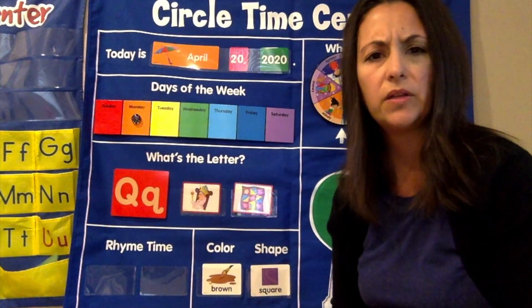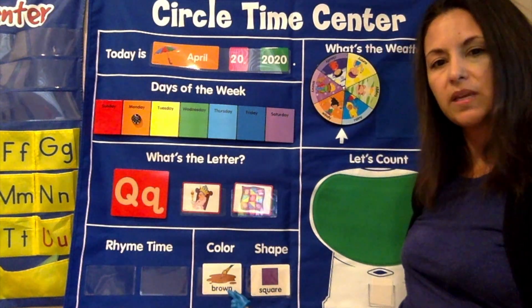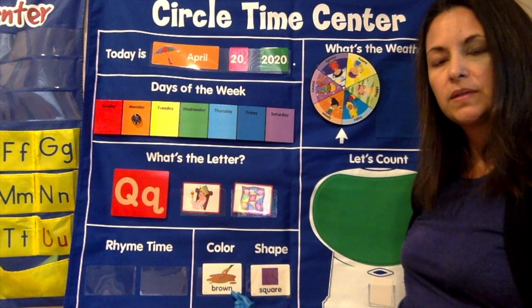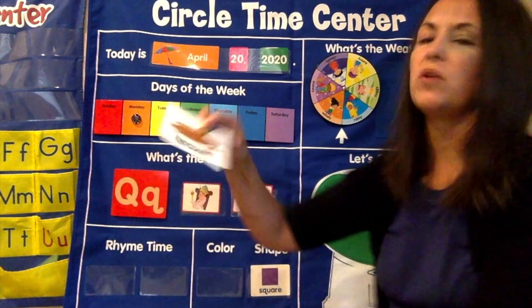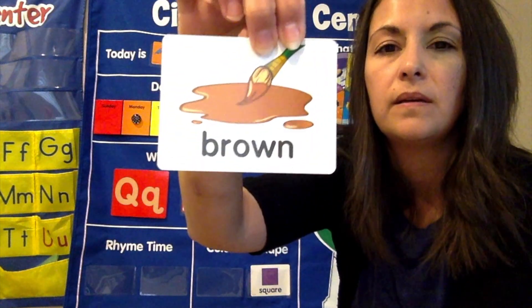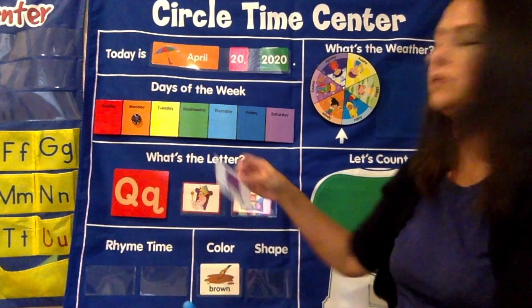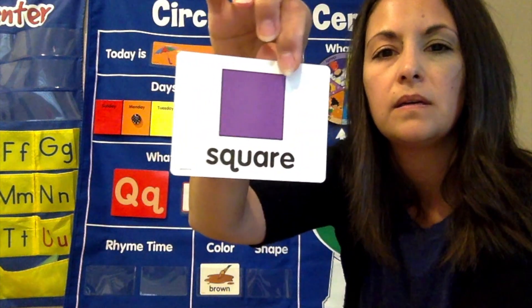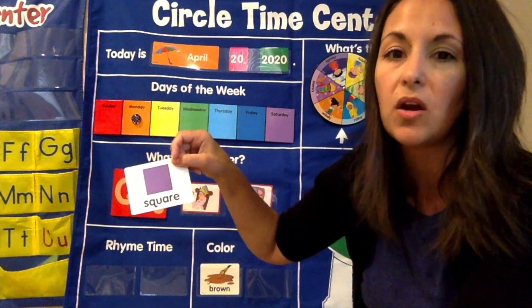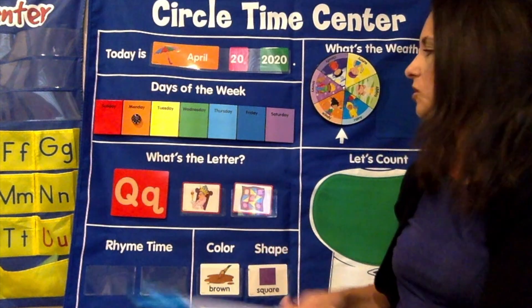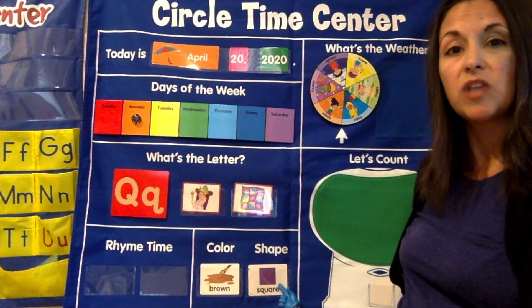Let's review a color and a shape this week. What color is this right here? Do you know? Did you say brown? Brown — that is the color brown. We will look for things that are brown this week. And what shape is this? If you said square, you're right. You're so smart — that is a square. So we will work on the letter Q, the color brown, and the square shape this week.